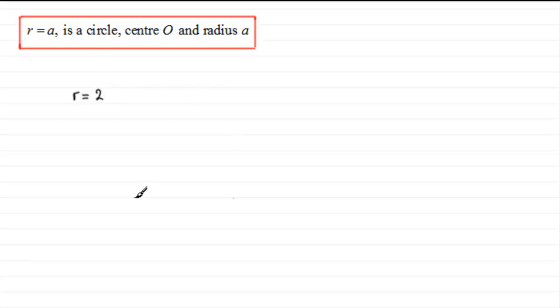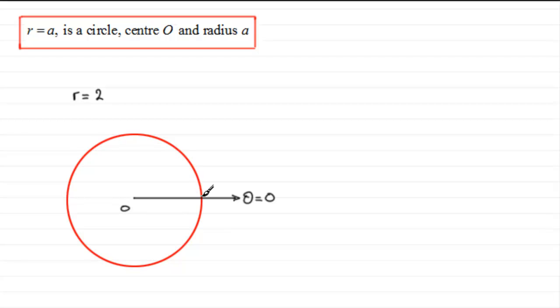So if we had something like r equals two, what I'd want to do is sketch an initial line — theta equaling zero degrees or zero radians — this would be our center O, often called the pole. Then I would just draw a circle of radius two units. This point here would be where r equals two, all the way out here.